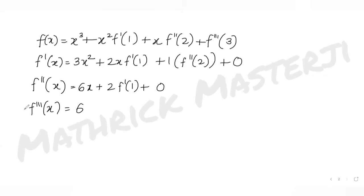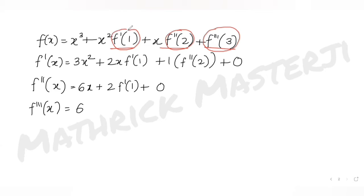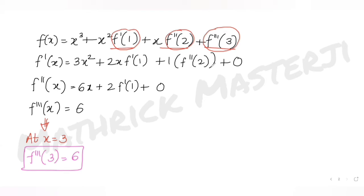Now we need to figure out the values of these three constants — f'(1), f''(2), and f'''(3) — because once we have those, we can write f(x) explicitly and find f'(10). Starting with f'''(3): the third derivative is 6, which is independent of x, so f'''(3) = 6.